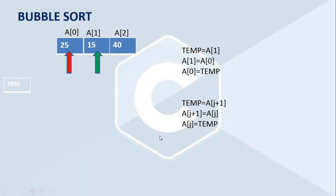Now we can summarize the bubble sorting technique. Here we have an array with three different elements with indices 0, 1, and 2. The array name is A. To perform the sorting, we need to compare the first two elements. We want to perform ascending sorting — that means arranging elements from smallest to largest. So first, compare these two elements.